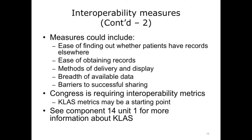The measures that were proposed include the ease of finding out whether patients have records elsewhere, the ease of obtaining those records, the methods of delivery and display of those records, the breadth of available data, and the barriers to successful sharing of the data. As part of recent legislation, Congress required the Department of Health and Human Services to establish metrics for interoperability by July 2016 that could be used to determine the extent to which widespread exchange of health information is being achieved. It is possible that the metrics outlined at the CLAS summit would be the starting point for those metrics. For more information about CLAS, please see Component 14, Unit 1.